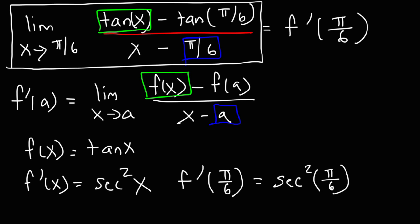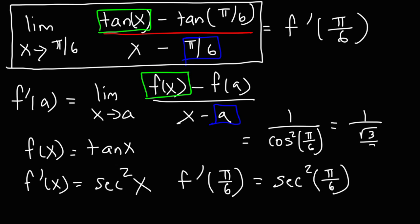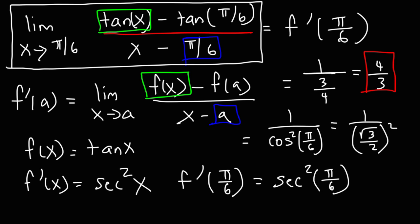Now what is secant squared of π/6? Secant is 1 over cosine, so secant squared is 1 over cosine squared of π/6. What is cosine of π/6? Cosine of π/6, or cosine of 30 degrees, is equal to the square root of 3 over 2. This is squared, so the square root of 3 squared is 3, and 2 squared is 4. So we have 1 over 3/4, which is 4 over 3. That is the final answer — it's equal to the value of this limit.